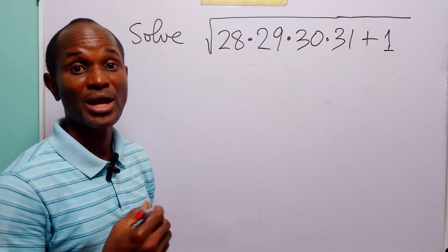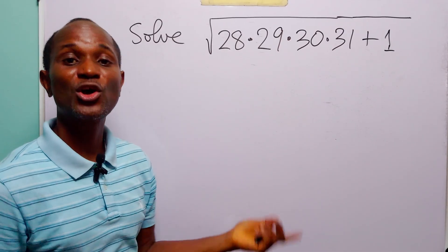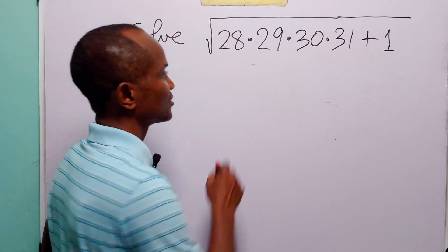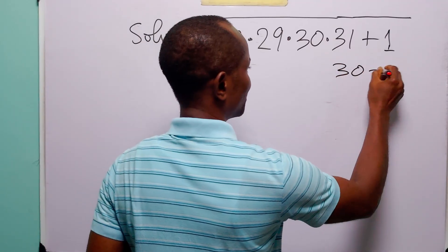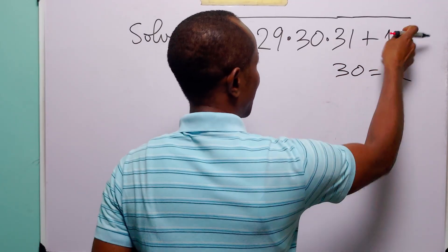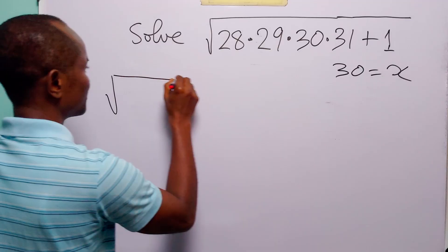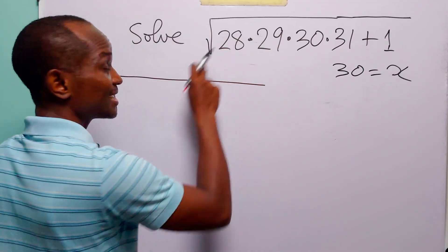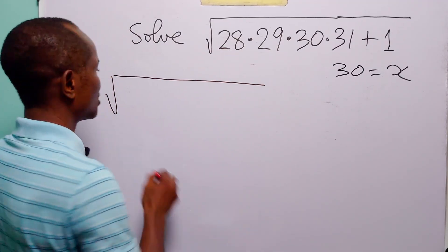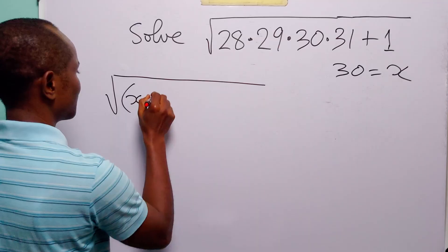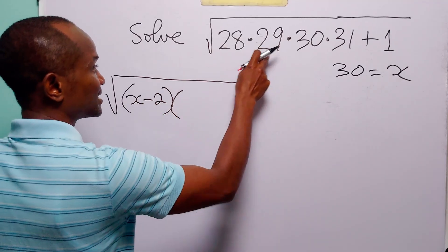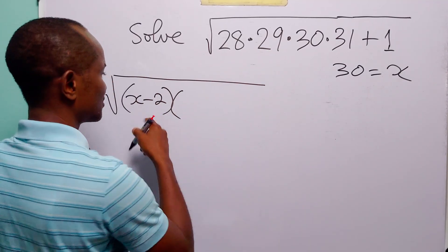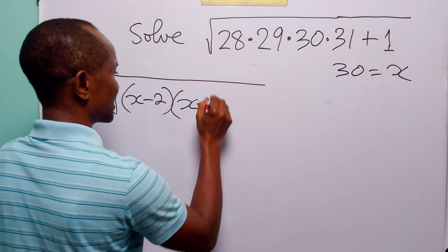Now when we choose this number we are going to call it x or any other letter of your liking. So let 30 be equal to x, and then this question is now going to be 28 is 30 minus 2. So here we have x minus 2. 29 is 30 minus 1. So this is going to be x minus 1.